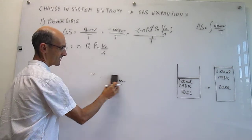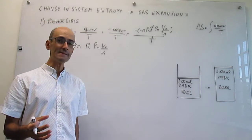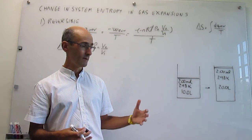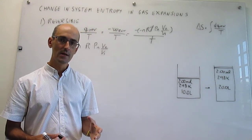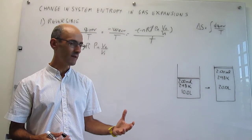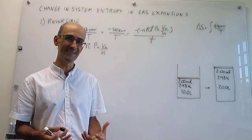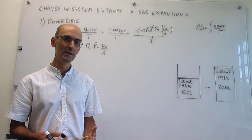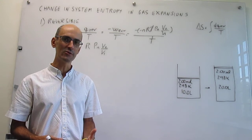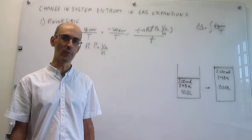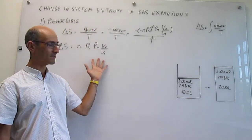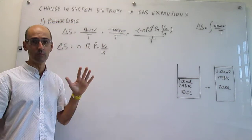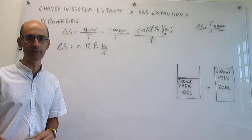Before plugging in numbers, it's easy to anticipate the sign of this entropy change. When the gas expands, it has much more room to move — it is more entropic in the final state than in the initial state. The gas expansion is a mass dispersal, so it should be entropically favorable, leading to a rise in entropy. We therefore expect a positive number, consistent with the gas being more disordered when it has more room to move.